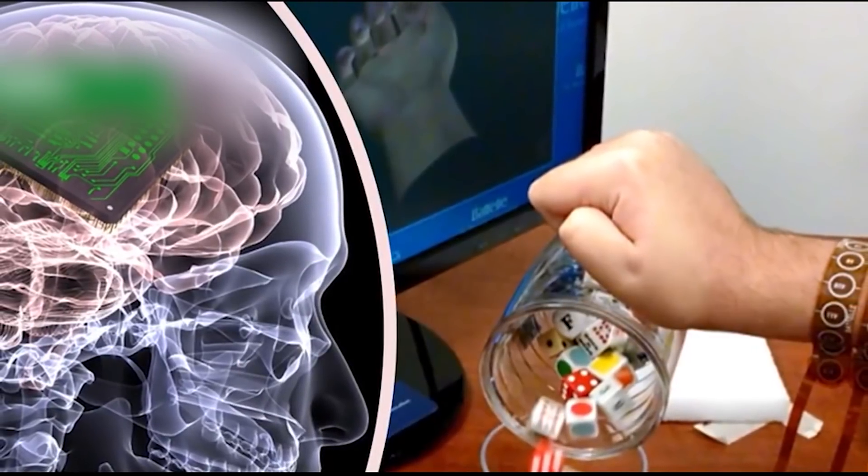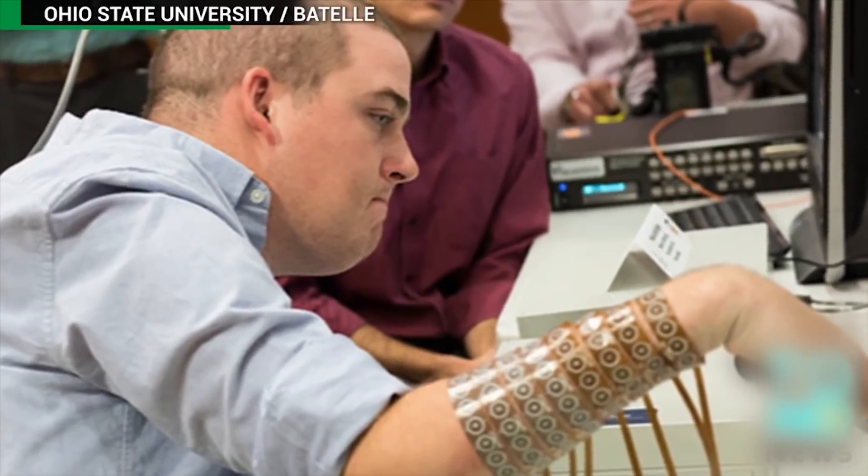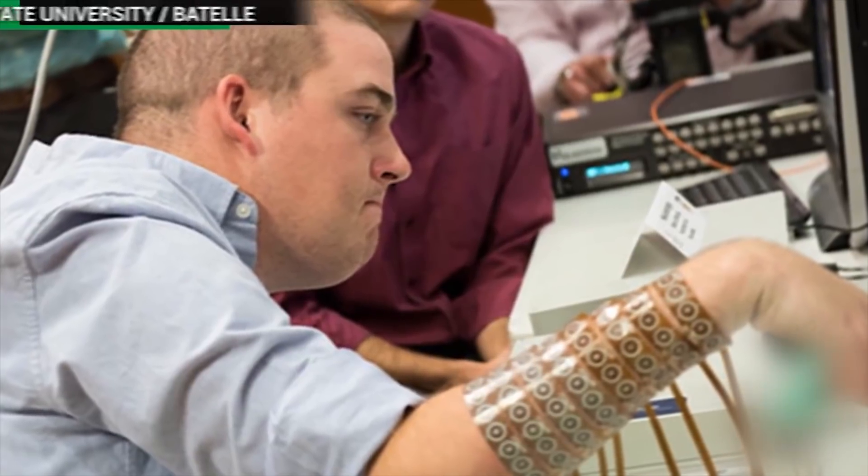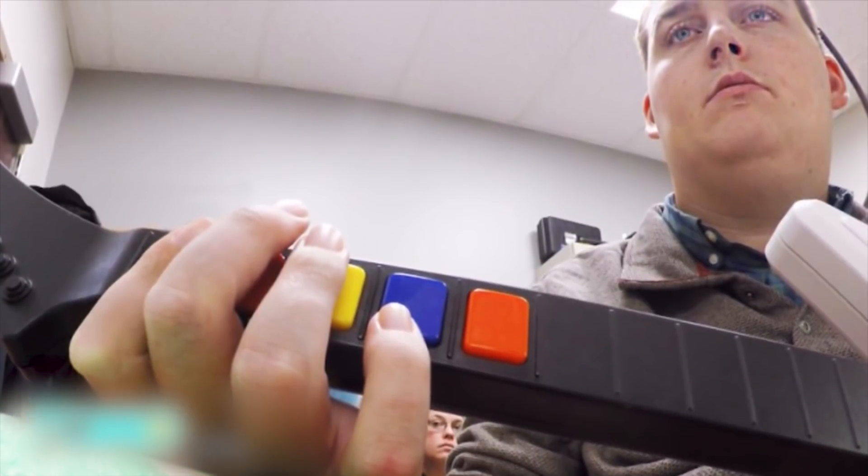Man's paralyzed limb reanimated with the help of a brain chip. A team from Ohio has made a medical breakthrough, successfully developing technology that allows brain signals to bypass a spinal injury and transmit straight to the muscles.